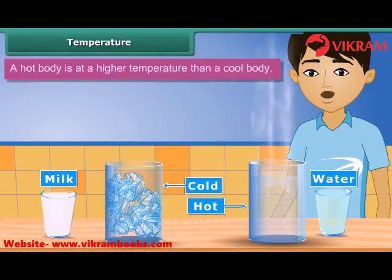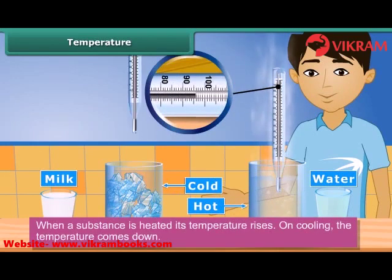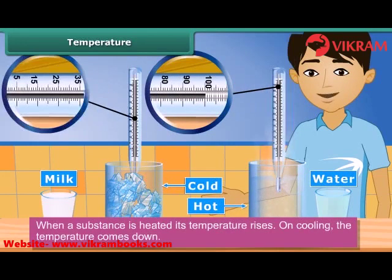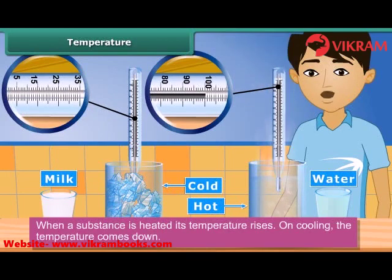Obviously, for this we need a measure to know about the coldness and hotness of a body. A hot body is at a higher temperature than a cool body. When a substance is heated, its temperature rises. On cooling, the temperature comes down. The degree of hotness or coldness in a body is described as its temperature.